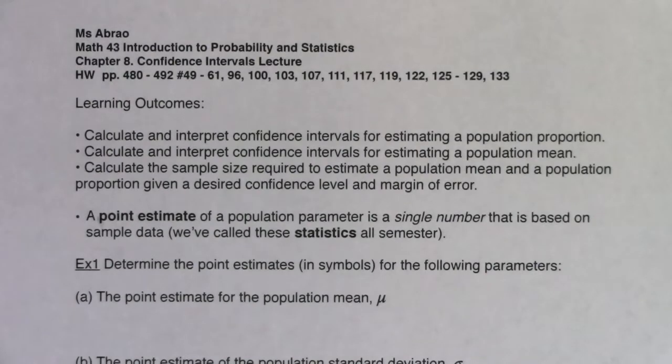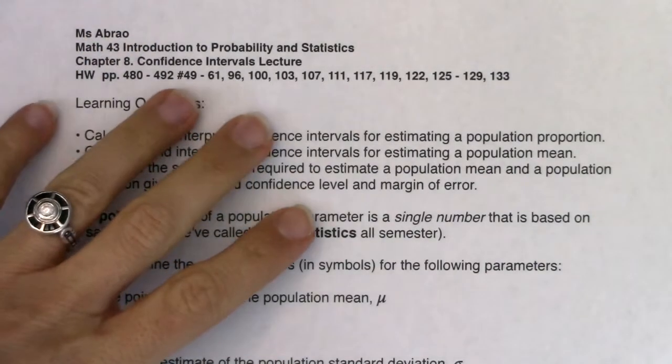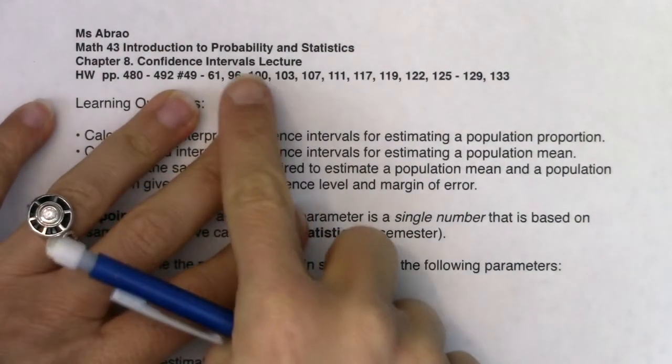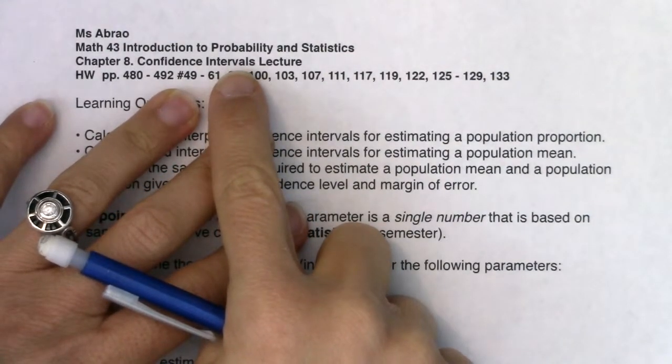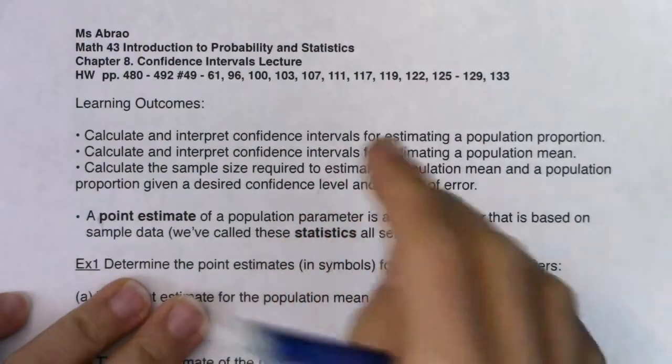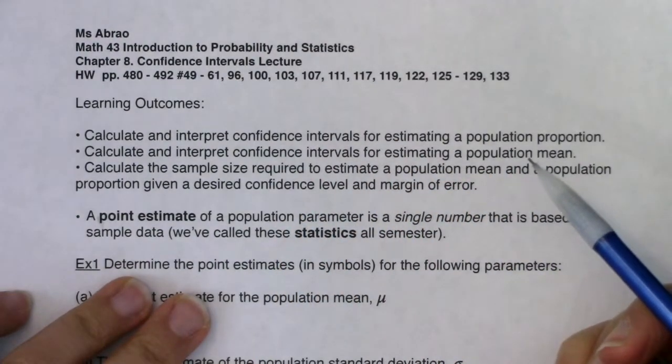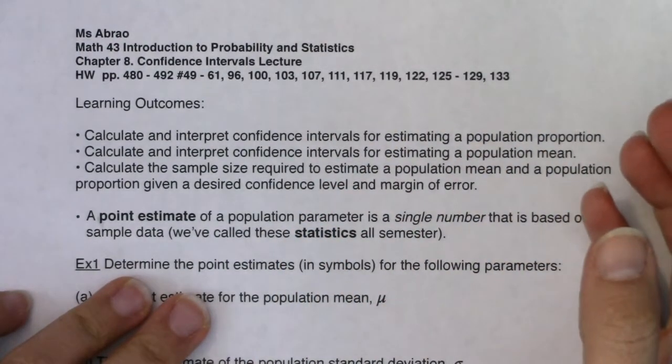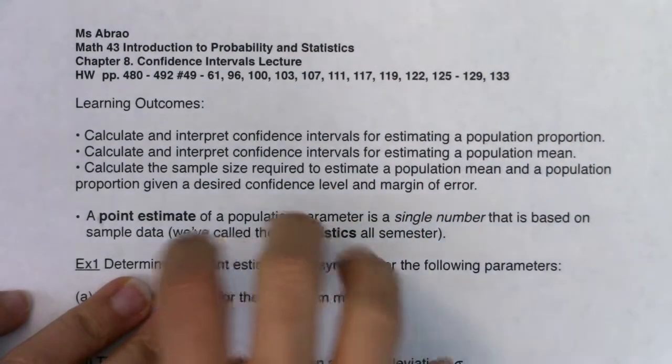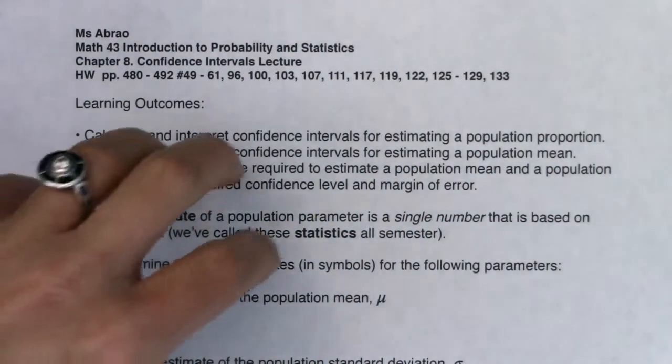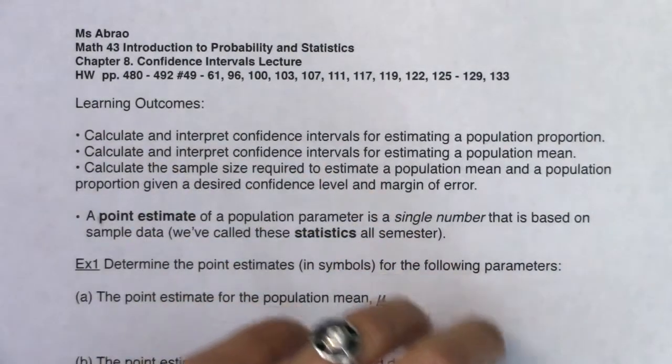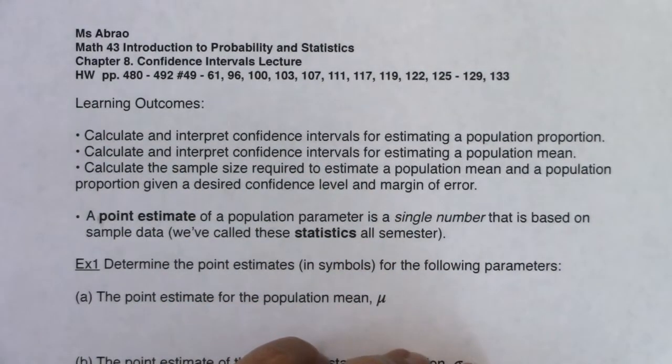Hey Math 43, let's get going with Chapter 8 here. We're finally going to learn about confidence intervals. This is where we make a guess about our parameter based on a statistic, and we're going to do this in two different lands: mean land and proportion land. Those are going to tie into our sampling distributions from Chapter 7, where we had the sampling distribution for averages and the sampling distribution for proportions - numerical and categorical data.